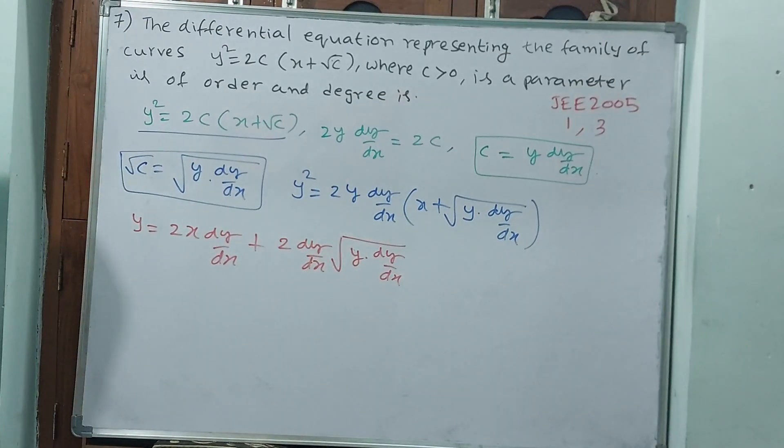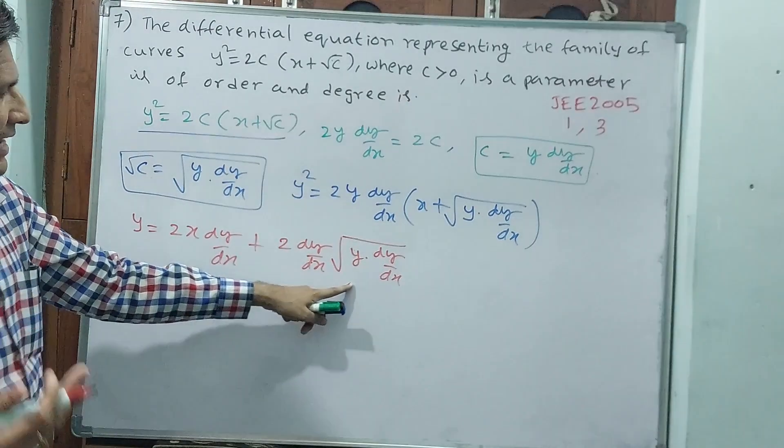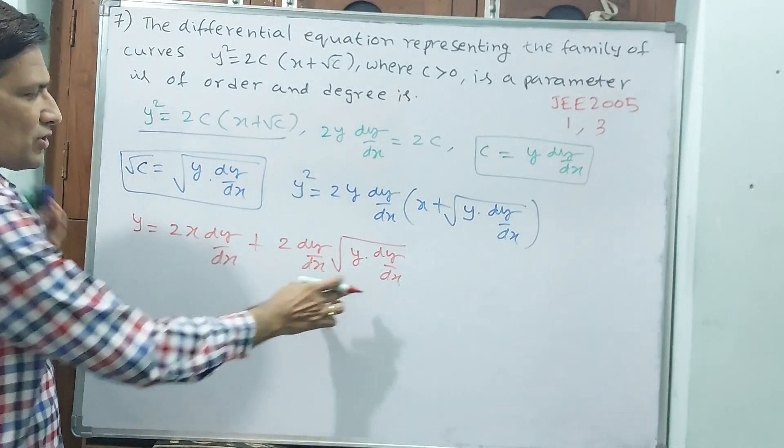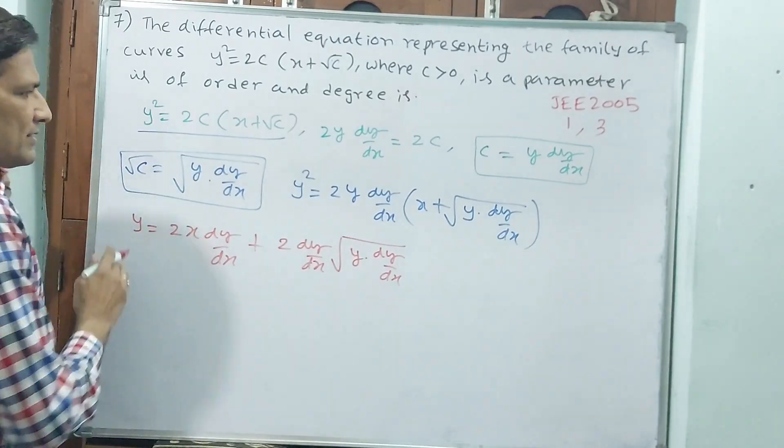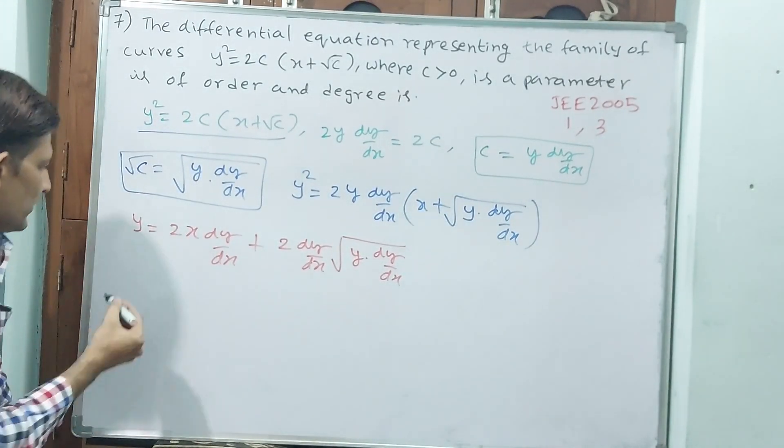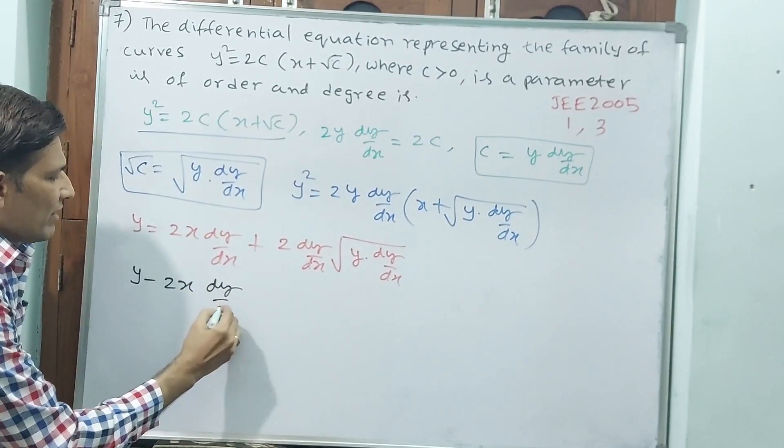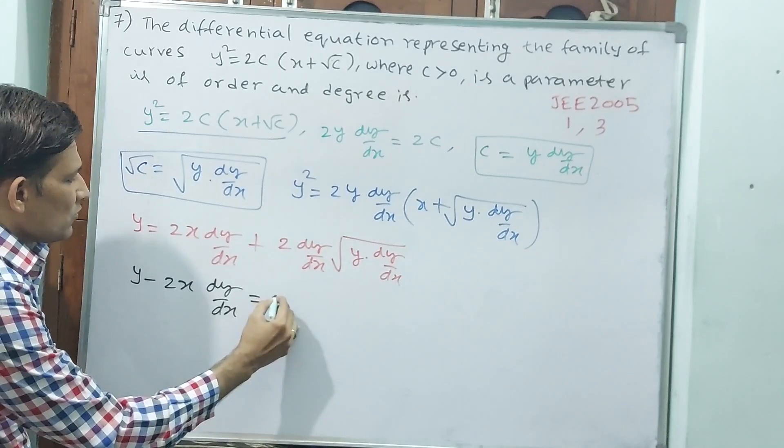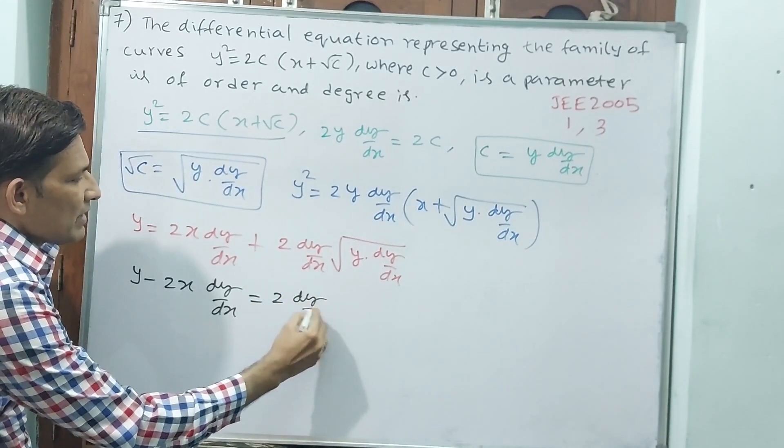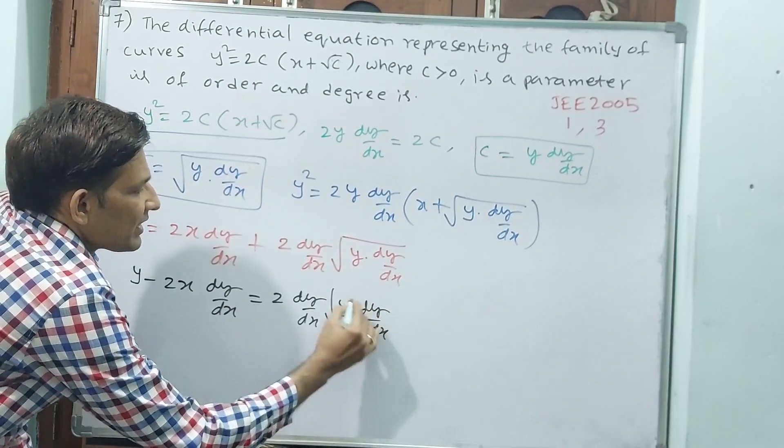Now, I want to remove the square root. See, step 2 you have to understand here. If I want to remove the square root, keep this term on this side, this term on that side. So, y - 2x·dy/dx = 2·dy/dx·√(y·dy/dx).